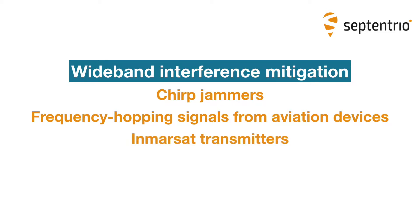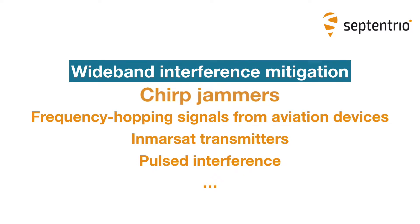It's also capable of dealing with pulsed interference more effectively than traditionally used pulse blanking methods. In this example, I'll show you how to use wideband interference mitigation to reduce the effect of a chirp jammer.